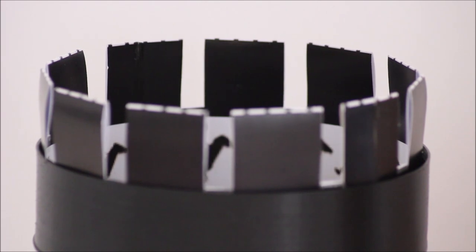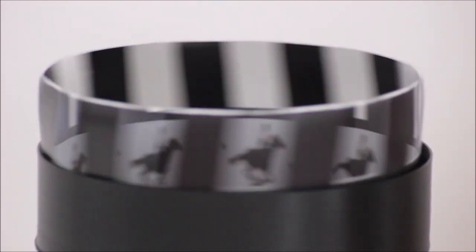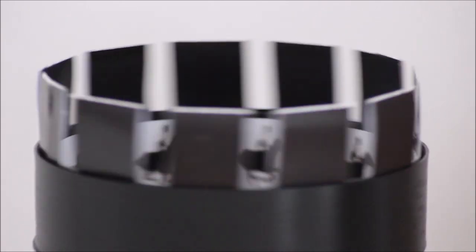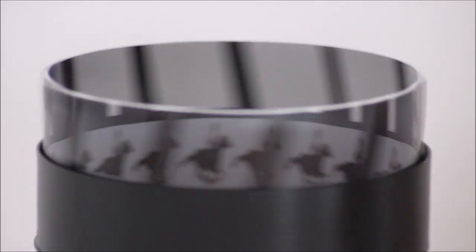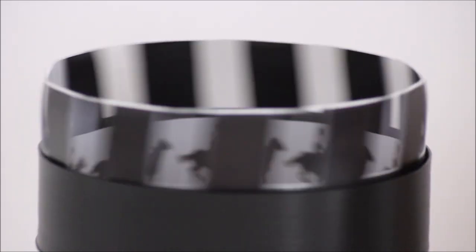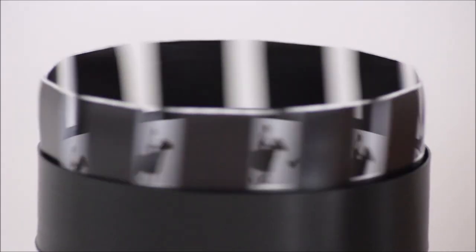As the cylinder spins, the user looks through the slits at the pictures across. The scanning of the slits keeps the pictures from simply blurring together, and the user sees a rapid succession of images producing the illusion of motion.